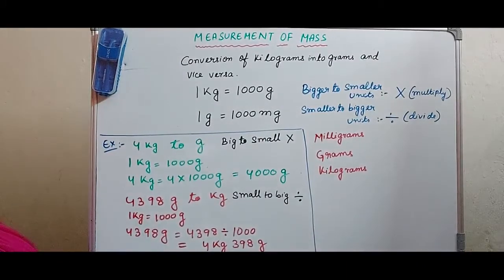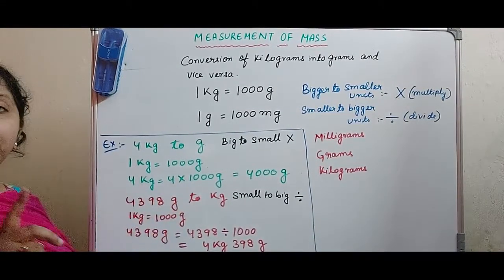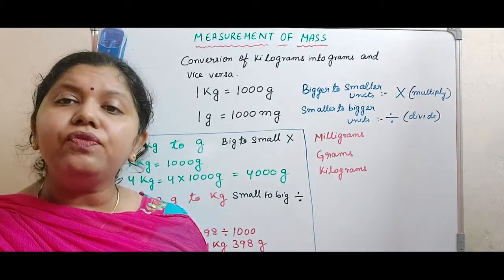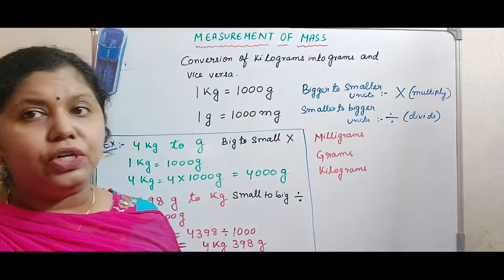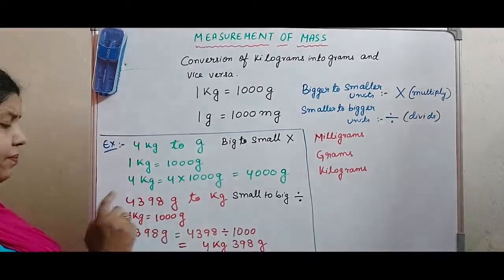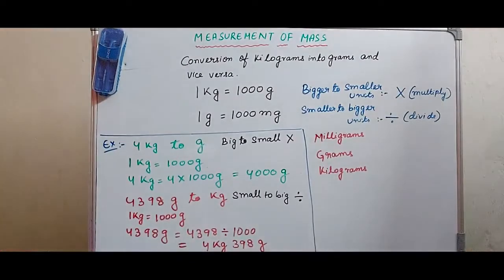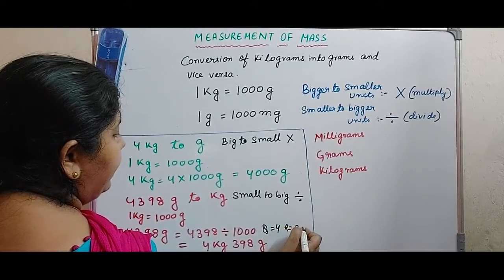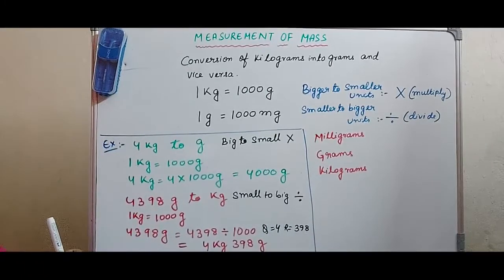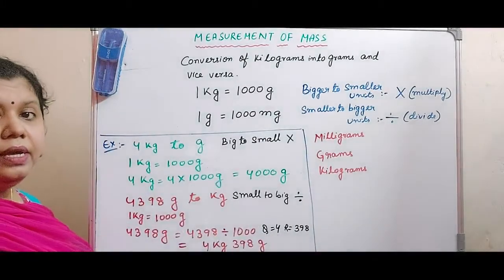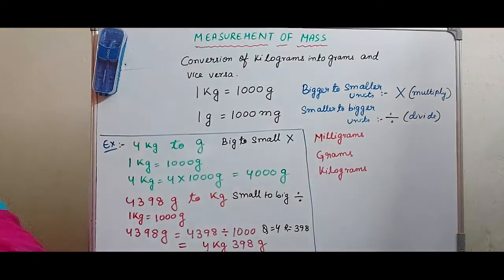Now look at the second example: 4,398 grams converting into kilograms. Grams to kilograms is a conversion from smaller unit to bigger unit, so we go for division. We divide 4,398 by 1000, because 1 kg equals 1000 grams. The quotient will be 4 and the remainder will be 398. The remainder stays in the same unit — 398 grams — and the quotient converts to kg. So the answer is 4 kg 398 grams.